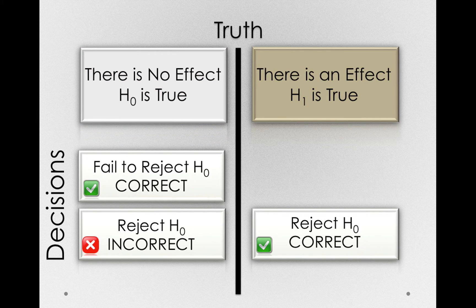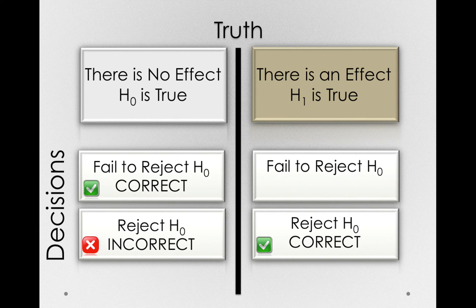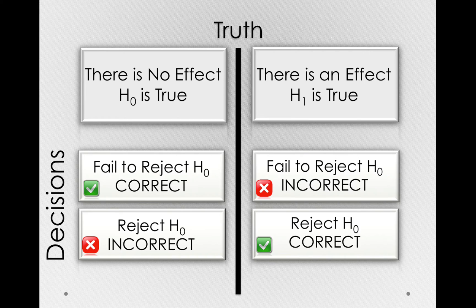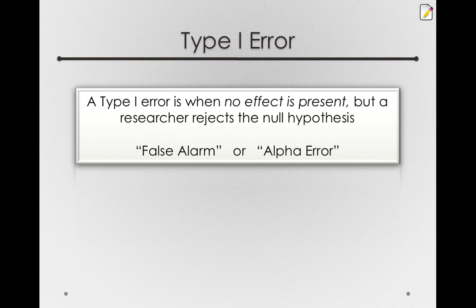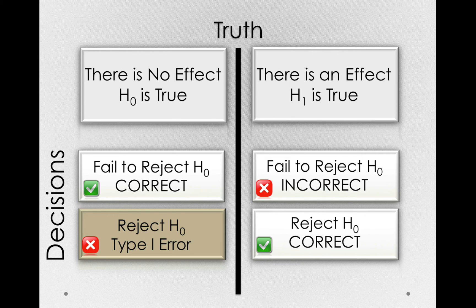On the other hand, if there is an effect in the world, H1 is true, and we fail to reject the null hypothesis — saying the null hypothesis is still a reasonable explanation — well, that's also an incorrect decision. These errors are pretty important, so we give them names. Rejecting the null hypothesis when we're in a world where the null is true is known as a Type 1 error — when no effect is present but a researcher rejects the null hypothesis as reasonable. We call this a false alarm, or an alpha error. It's a false alarm because we're in a world where there's nothing to alarm about. This type 1 error is what we will be protecting science from by doing this entire hypothesis testing enterprise.